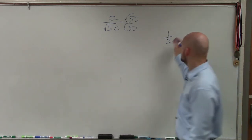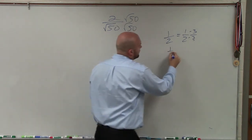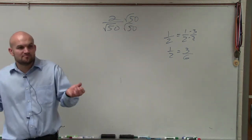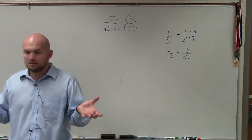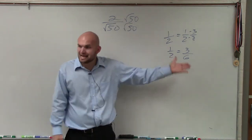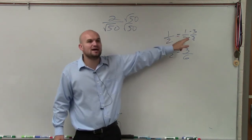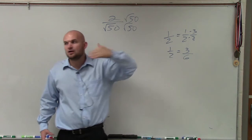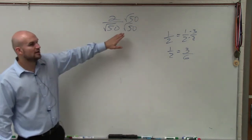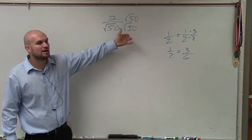The reason why this works is: take the fraction 1 half, and multiply it by 3 over 3. Then 1 half equals 3 over 6. Is 1 half the same as 3 over 6? As far as the proportion, yes — these ratios are equal to each other in their amount. What's important is I multiplied the same number by the numerator and the denominator. Whenever you take a fraction and multiply it by the same number, you produce equivalent fractions. Since I multiplied square root of 50 on top and bottom, I'm not changing the value of my ratio.